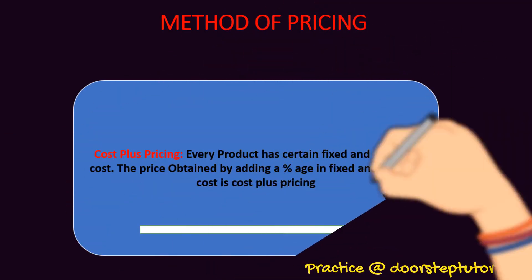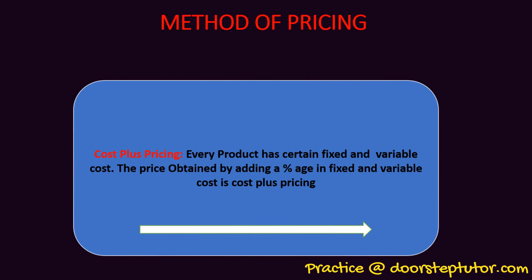The first method is cost plus pricing. Every product has a certain fixed and variable cost attached to it. What happens in cost plus pricing? We actually add a certain percentage to this fixed and variable cost. This is basically cost plus pricing, wherein we fix a certain value to the actual cost of the product, which is in the form of fixed and variable cost.